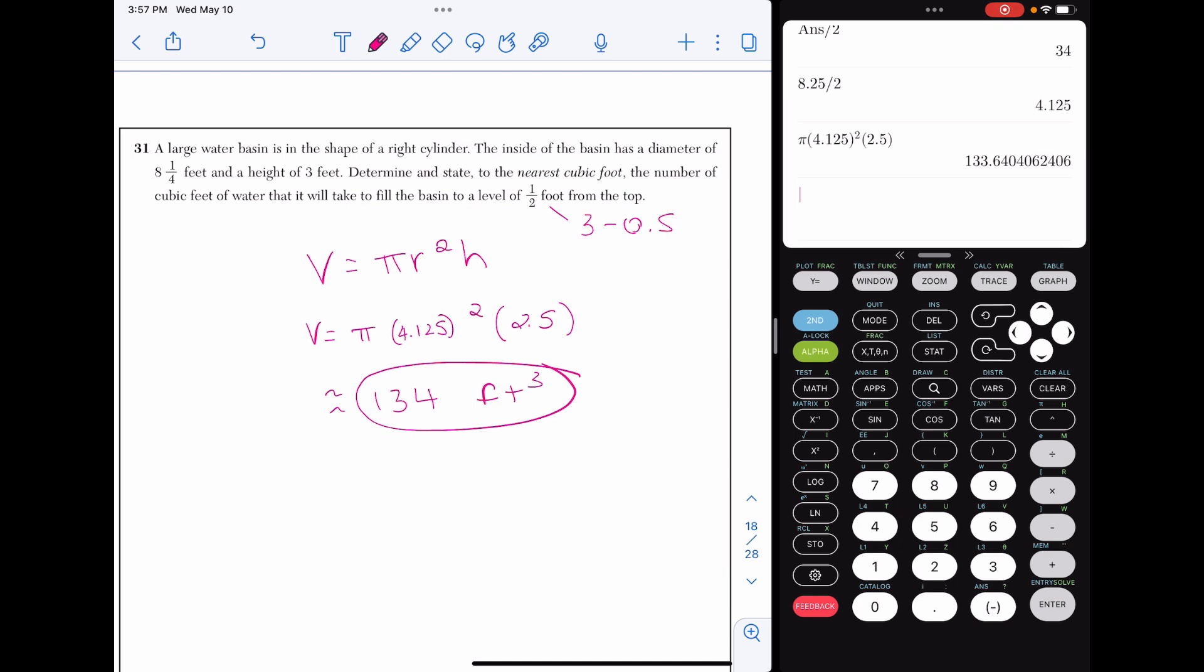Okay, so again, notice the little trick in that question that you had to subtract out 0.5 from the height. Okay, go to the next video in this playlist. You'll see the answers to 32 through 35, which is the part 3 and 4 questions.